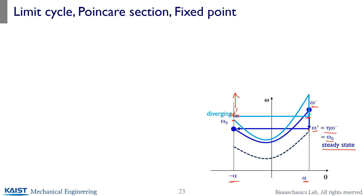Suppose you have an initial value of minus alpha and a value a lot smaller than omega naught. You can increase through the single support phase, and at the collision point, you have a reduced omega plus. You switch to the initial value of the new stance leg. Starting here and moving up, with that new initial state, you have another step — single support phase, collision, and stance leg swap. After repeating this, you can see it approaching the steady-state value. This is a converging example.